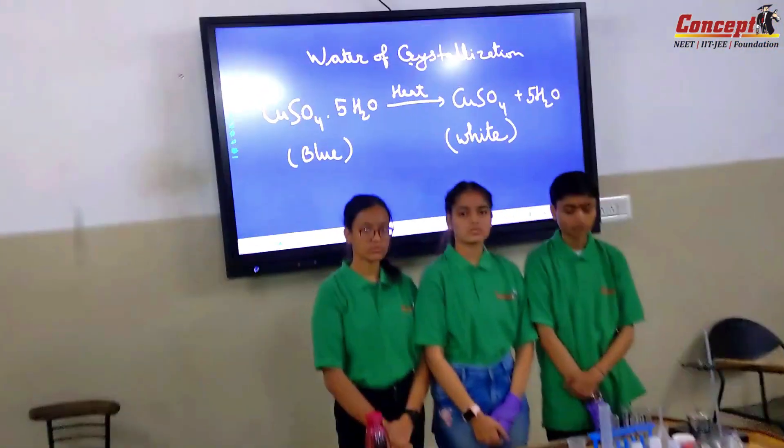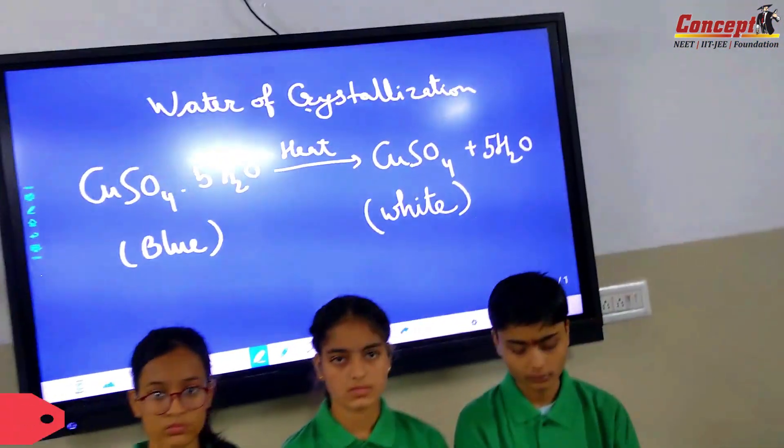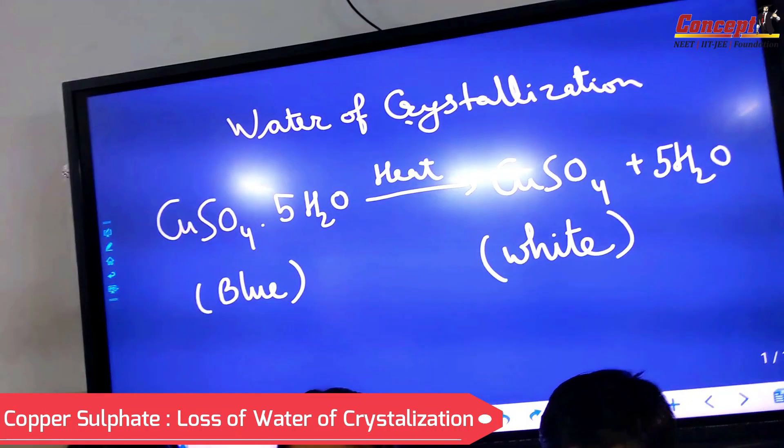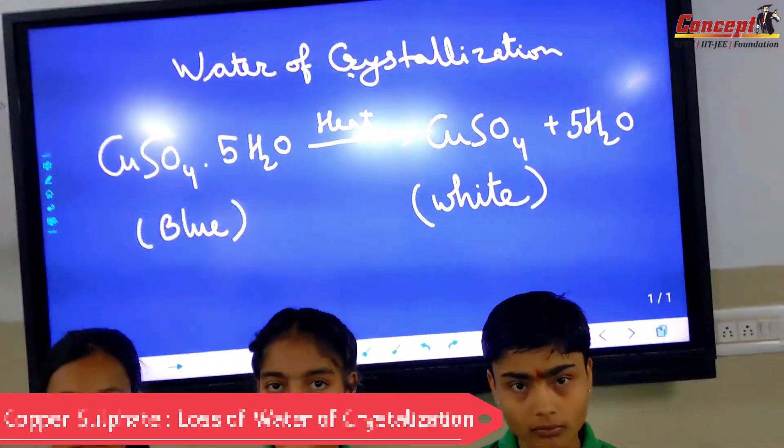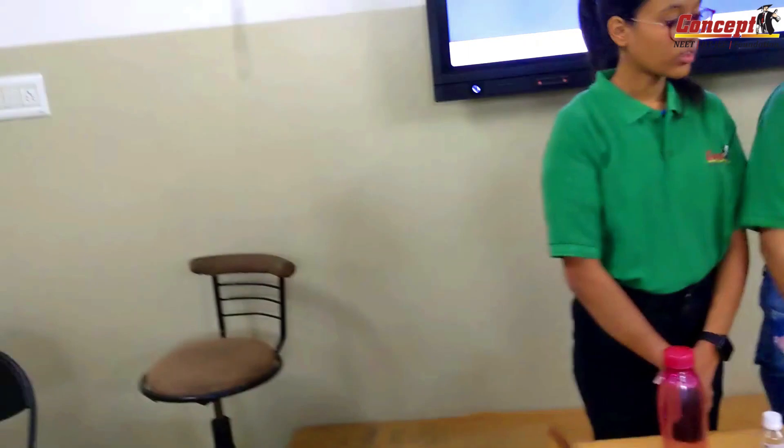In today's class we are trying to see how copper sulfate loses its water of crystallization. What happens if we heat copper sulfate? It will change into white color. Let's try to see this with the help of an experiment.